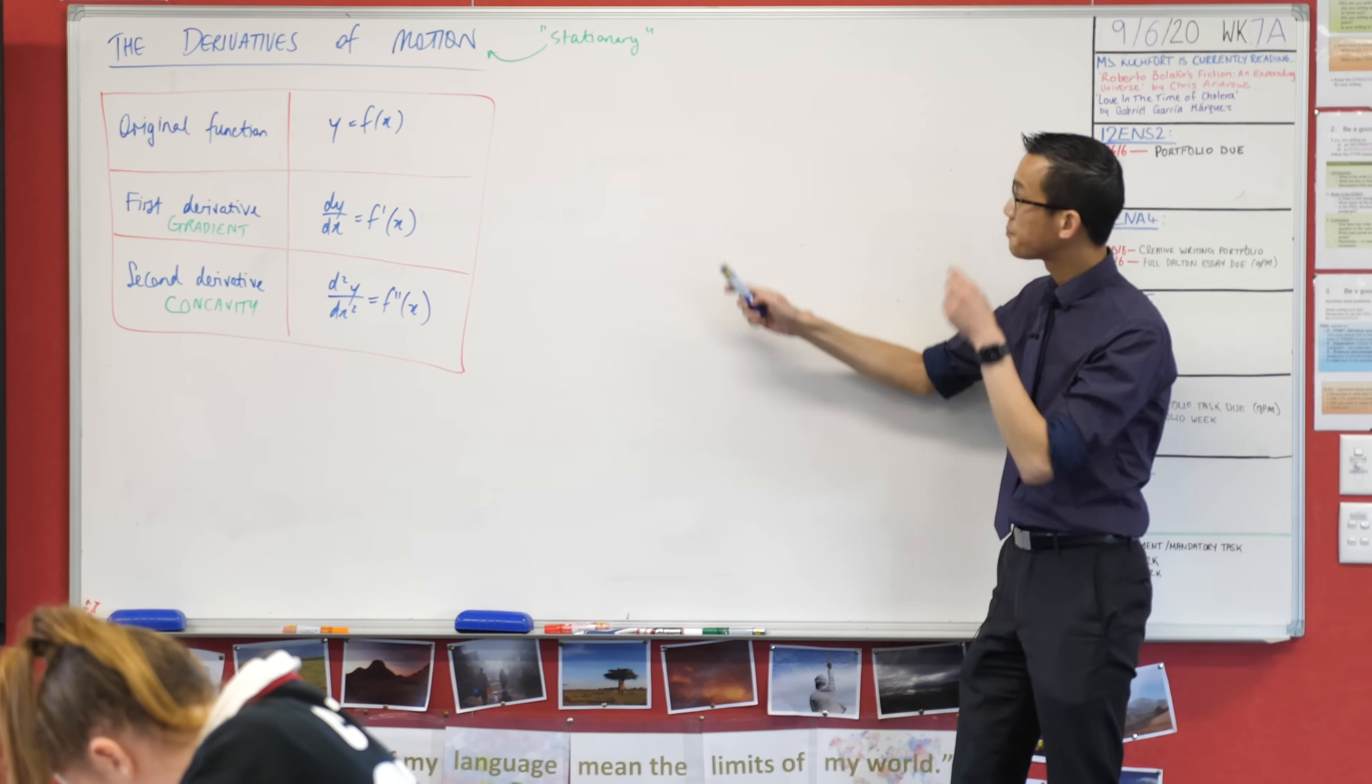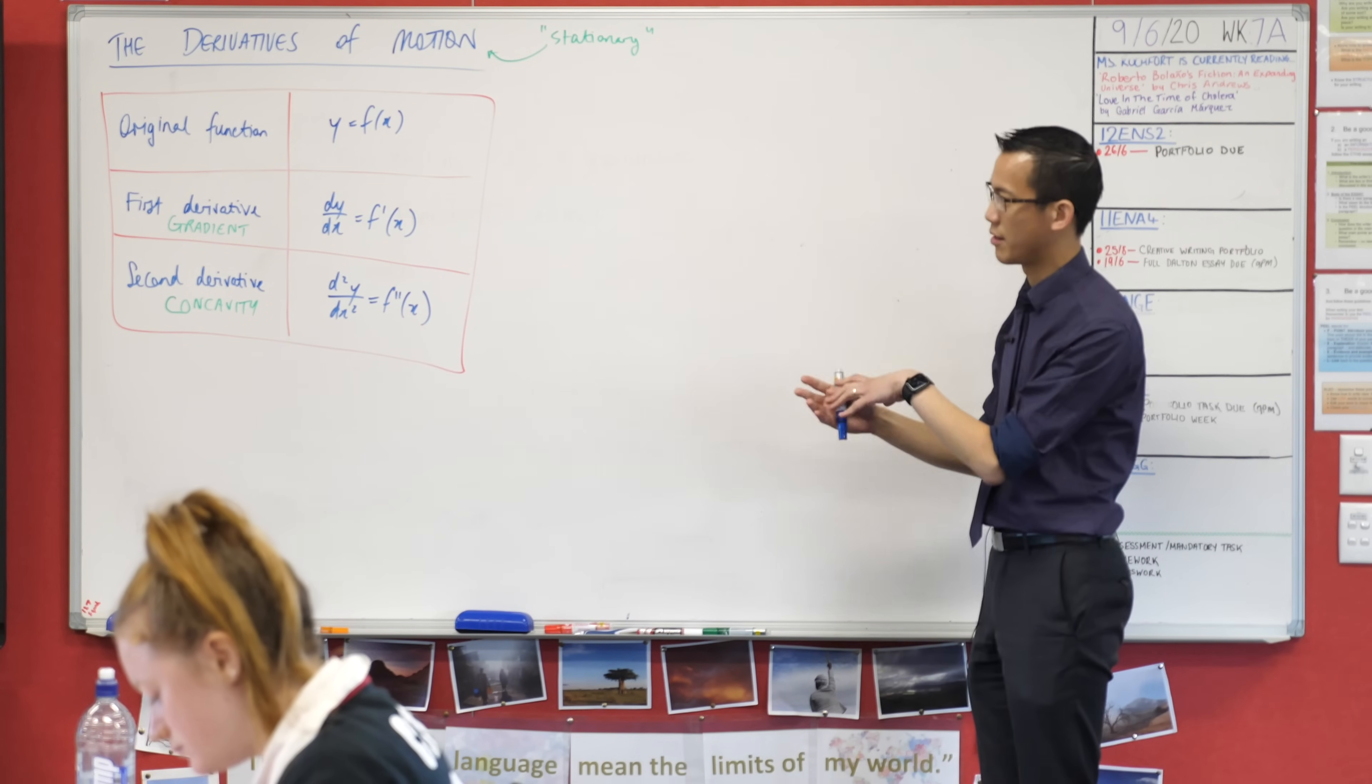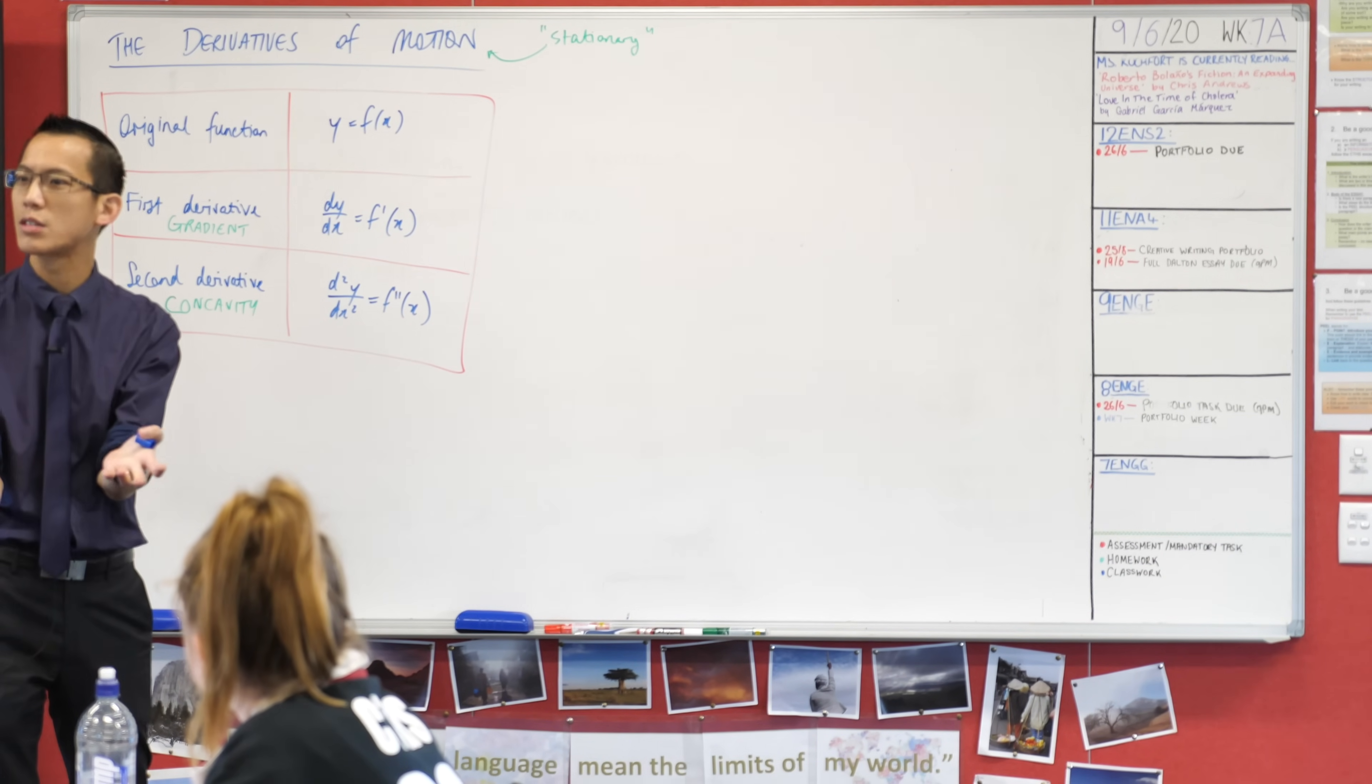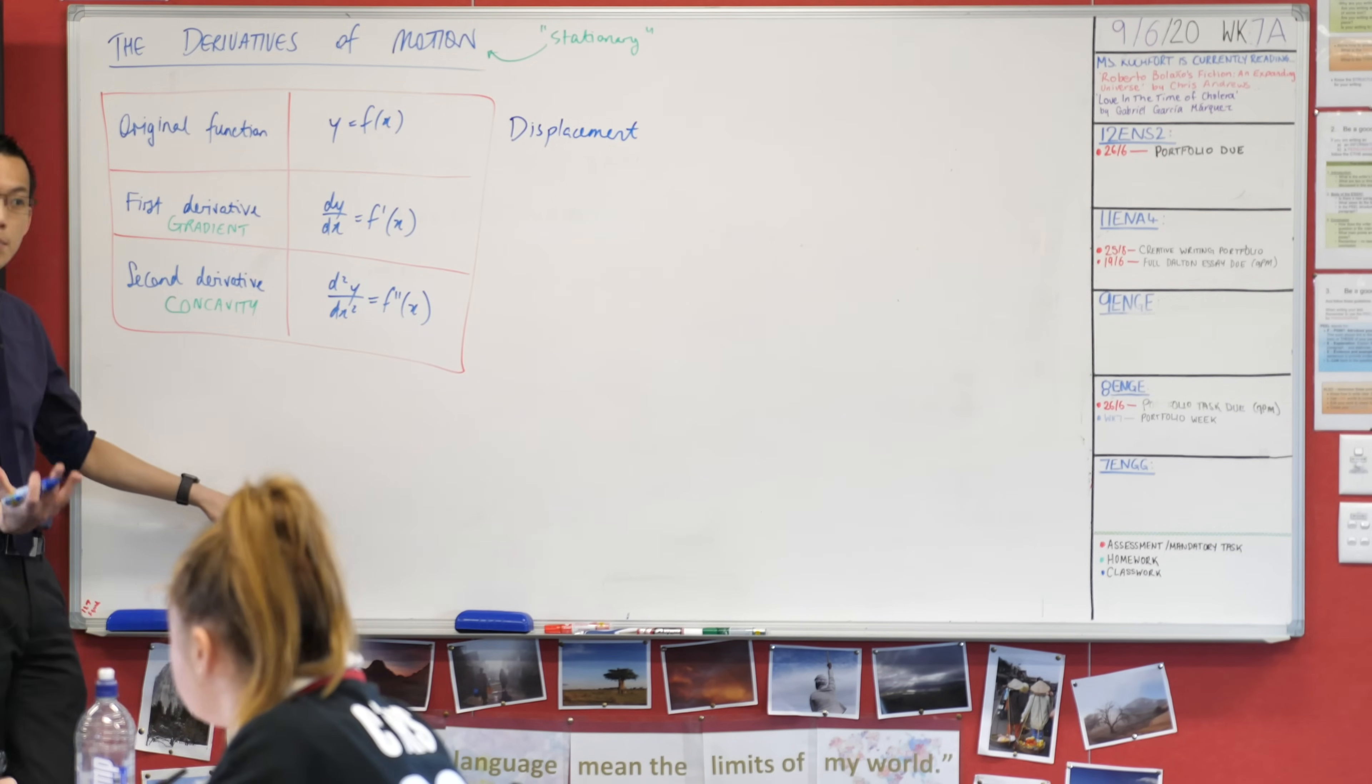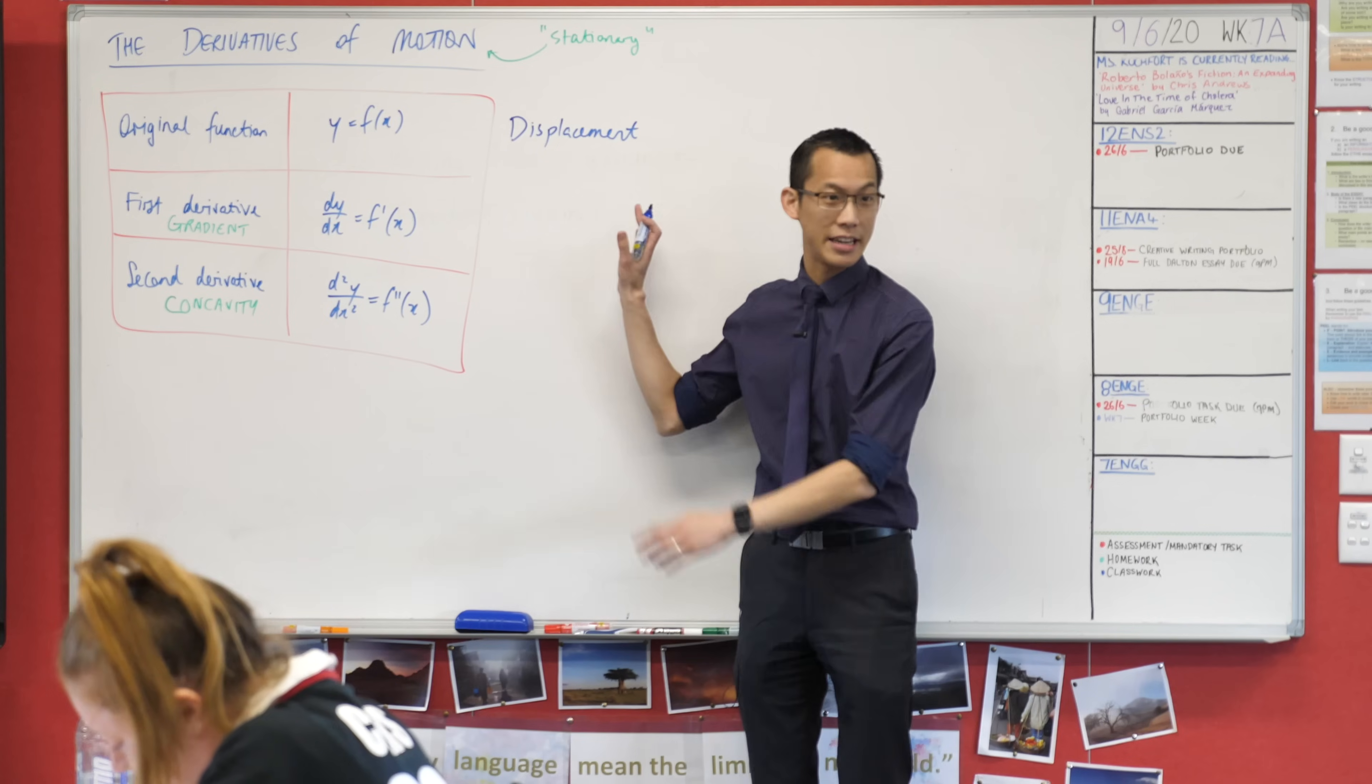We want to unpack this - we can understand motion with a handful of new notation and a few different concepts that we need to apply to our existing knowledge. When it comes to an original function, where is your object that's moving, where is its position? The main word we use for that is displacement.